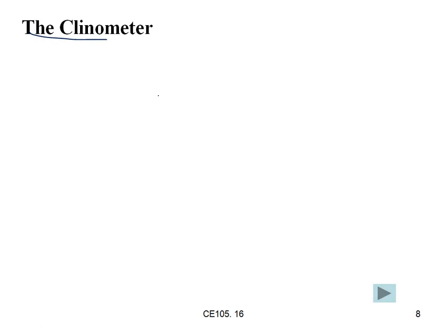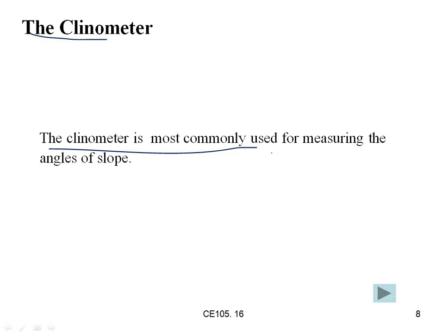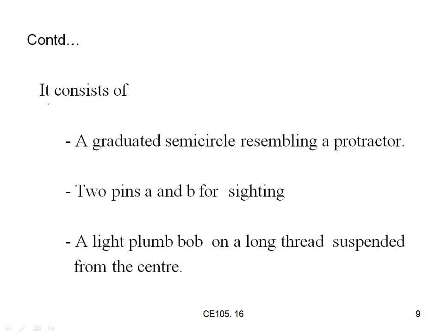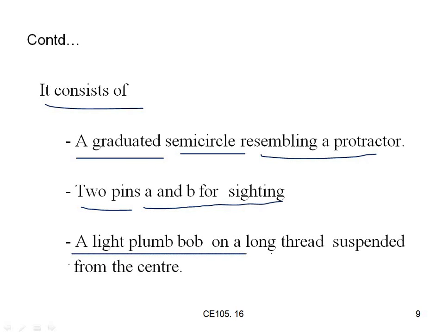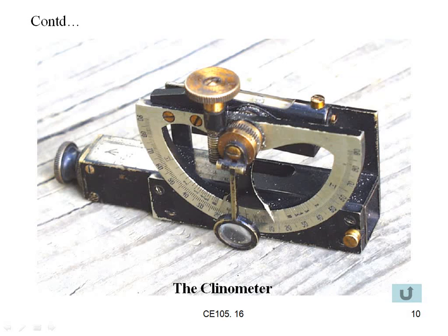The clinometer is most commonly used for measuring the angles of slope. It consists of a graduated semicircle resembling a protractor. There are two pins A and B for sighting, and a light plumb bob on a long thread suspended from the center.